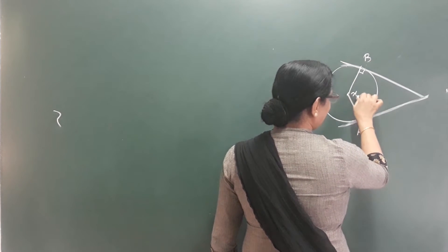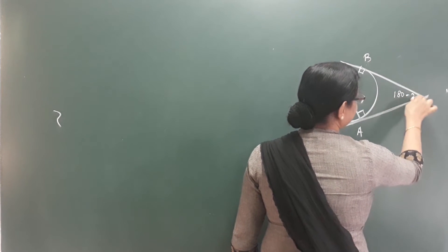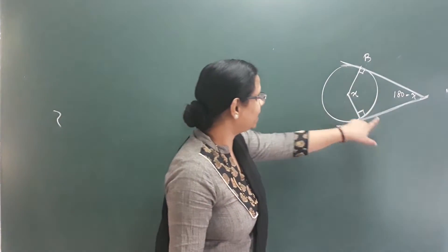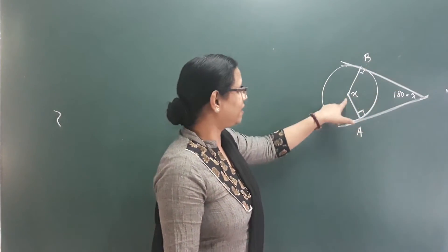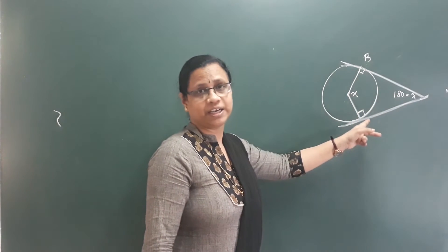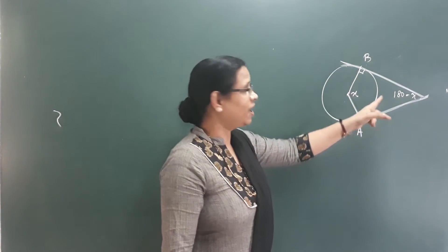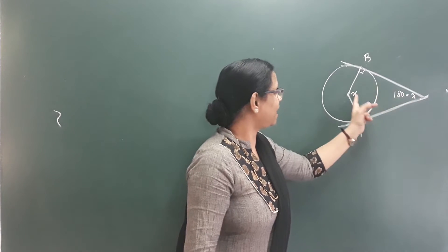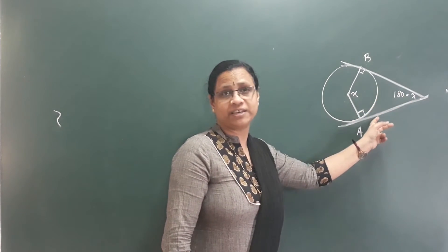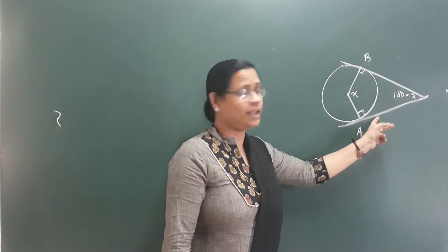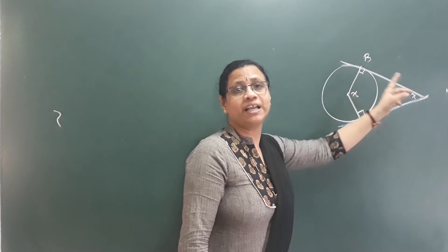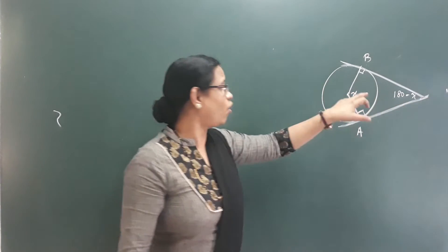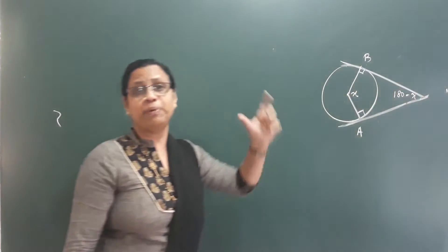We are learning a 180-x angle, because this is a co-lateral figure — it is a four-sided figure. The angles and tangents: we are learning a relationship with tangents. It is an x angle, and it is a 180-x angle. That means the opposite angles are supplementary.